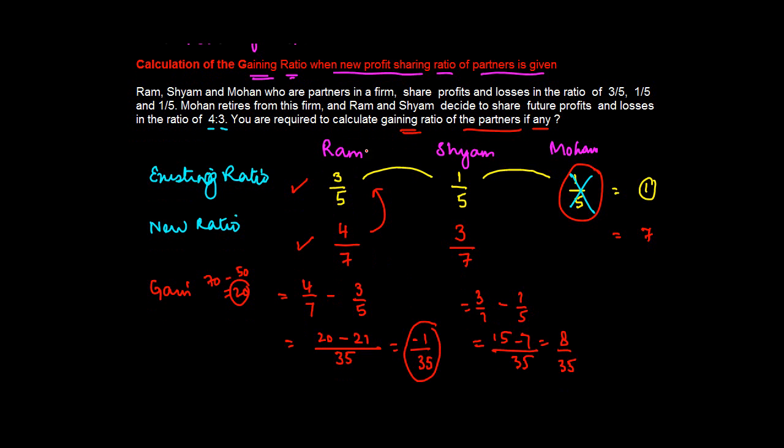What this says is that actually Ram stands to lose. Why? Because he was getting 3/5 earlier and now he's getting 4/7. If you see in terms of percentage, 3/5 is 60 percent, and 4/7 is roughly around 43 percent, so he's actually lost some amount of profits. Actually, not 43 percent, I'm sorry.